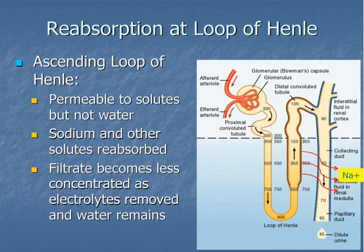Looking at osmolality across the nephron: filtrate entering and exiting the proximal convoluted tubule stays at 300 milliosmoles, because water and sodium are removed in a one-to-one ratio, reducing volume without changing osmolality. In the descending limb, osmolality increases as water is pulled out and reabsorbed by peritubular capillaries. Going up the ascending limb, osmolality decreases because sodium is pulled out via active transport but water stays behind — the tubule is impermeable to water. By the time fluid reaches the distal convoluted tubule it's around 100 milliosmoles — one-third the saltiness of normal blood.